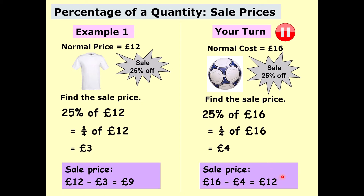These examples involve sale prices where we subtract the percentage value. But you may also come across examples where you add the percentage on — for instance, if a packet of crisps had 50% extra free, you would find 50% and then add it on. It's all about calculating the percentage and reading the question carefully to decide whether to subtract or add that amount.